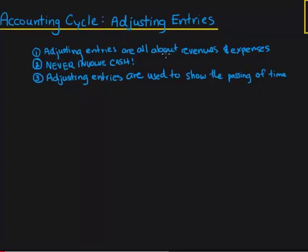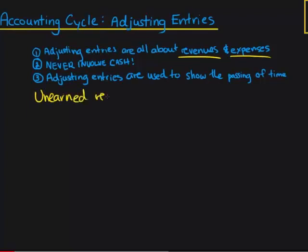The first rule is that adjusting entries are all about revenues and expenses. Adjusting entries look like journal entries — we'll have a debit and a credit. One type of revenue adjusting entry might look something like this: unearned revenue being debited and revenue being credited. This demonstrates that unearned revenue is being converted to earned revenue and reported on the income statement, because unearned revenue does not show up on the income statement — only earned revenue does.